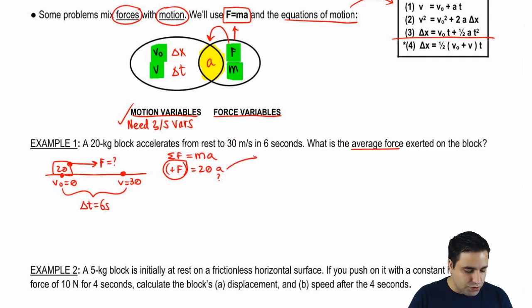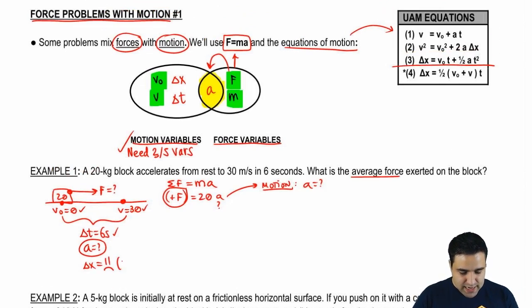So I already have one, two, three. I have enough variables to figure out acceleration. The fifth variable here is delta x. And that variable is my ignored variable. So I should use the equation that doesn't have my ignored variable, delta x. And that is the first equation. So to find acceleration, I can go here.